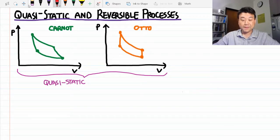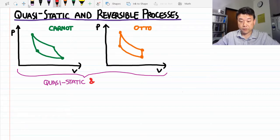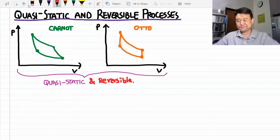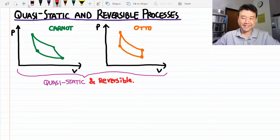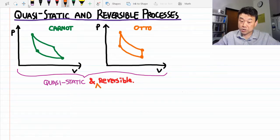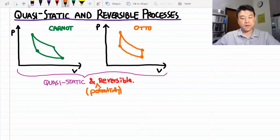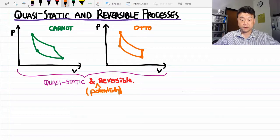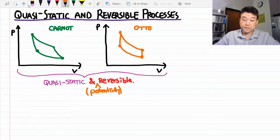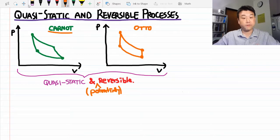So suppose I have convinced you that both of these processes are quasi-static. Then this is the claim I want to start with. They are also both reversible. Well, that's not technically right. They are both potentially reversible. I add this weasel word, potentially, because you can make these processes irreversible. In fact, you can even make the Carnot cycle irreversible.